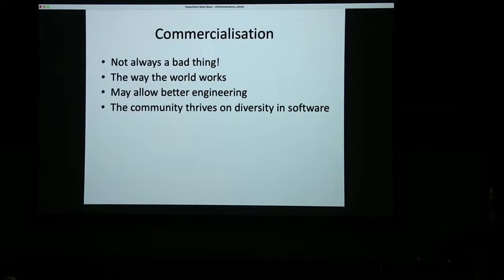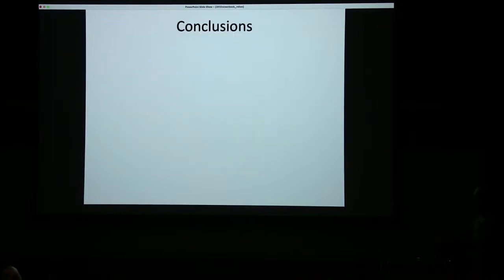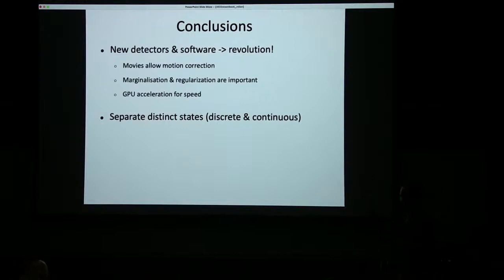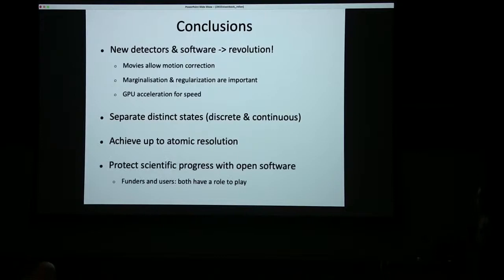I think the community thrives on diversity of software, so a mix of commercial and academic is a good thing. But I think scientific progress should be protected, and patents I see as a threat: in the end I don't want the power of what academics can do in their research to be in the hands of lawyers, and I feel we're in danger of sliding in that direction. So, to my conclusion slide: new detectors and software drove a revolution; being able to handle multiple structures for mixtures is really a key advantage of cryo-EM; we can push further on flexible-type heterogeneity separation, learn about protein dynamics, and achieve up to atomic resolution — as now possible for apoferitin. Ultimately we have to think about protecting scientific progress, and funders as well as users both have a role to play. Thank you very much.